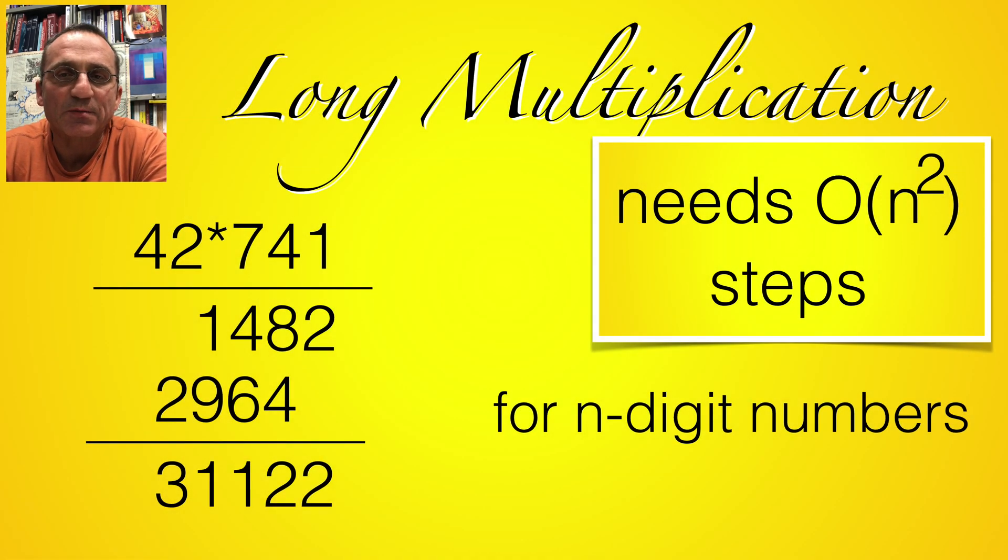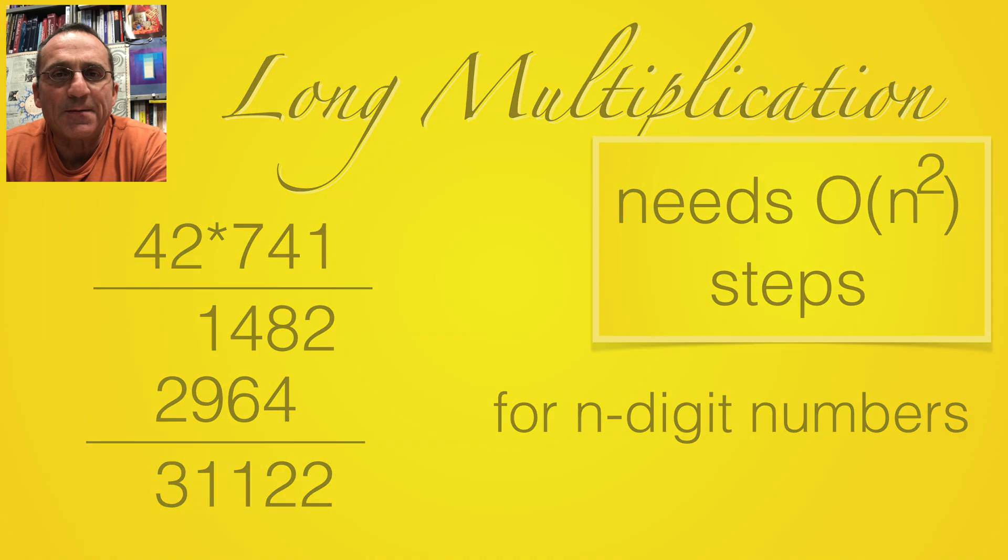The long multiplication which you learn in primary school has a complexity of about n-square operations. We write O(n²) and mean that the number of operations is a constant times n-square where this constant is independent of n.